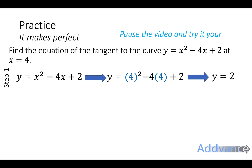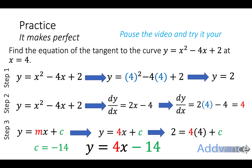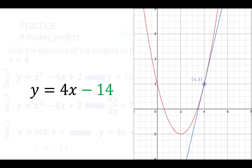Step one: substitute x = 4 into the curve to get y = 2. Step two: differentiate and substitute x = 4 into the derivative to get the gradient = 4. Step three: y = mx + c gives y = 4x + c. Substituting y = 2 and x = 4, we solve to get c = −14. The final answer is y = 4x − 14. The blue line shown is a perfect tangent to the curve at that point.